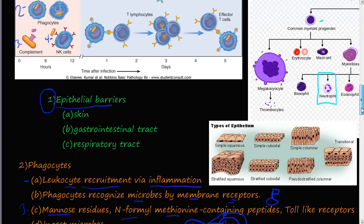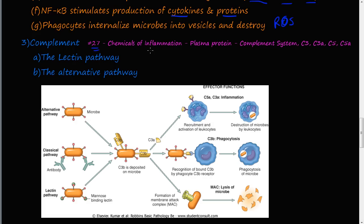Now we'll talk about complement, the third part of innate immunity. From a previous video on chemicals of inflammation, we discussed the complement system including C3, C3a, C5, C5a. The lectin pathway and the alternative pathway are part of the innate immunity. The classical pathway is part of adaptive immunity. In the lectin pathway, microbes have mannose sugars sticking off them — the same mannose flags mentioned in phagocytes.